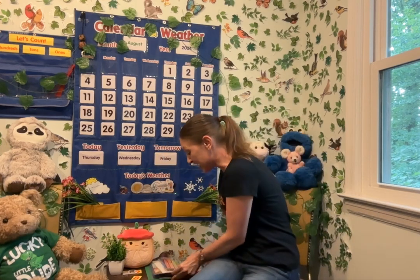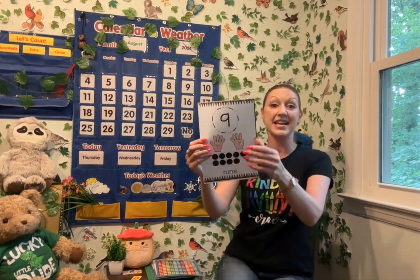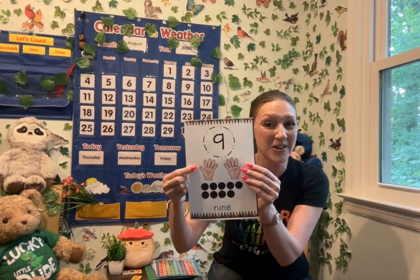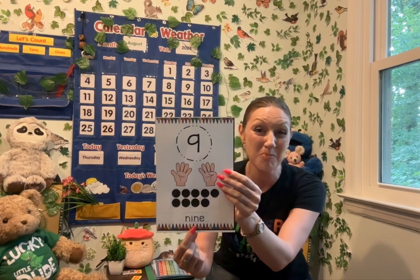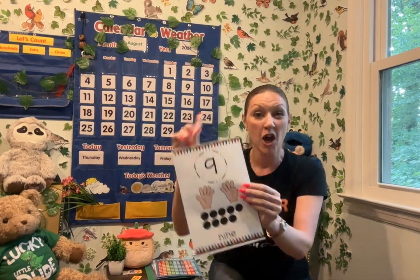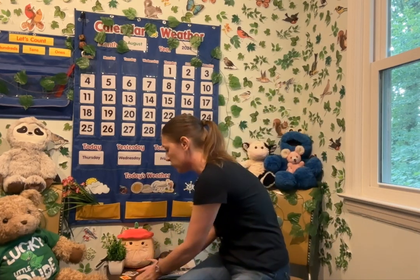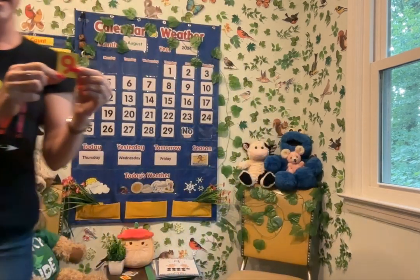Before we say this number together, we're going to look at it in a few different ways. Here's the numeral nine, number nine using fingers, nine in the tens frame, and the number word nine. Ready? Say this together: nine. And now we have this special number to add to our place value chart. Say it: nine. We have nine ones.